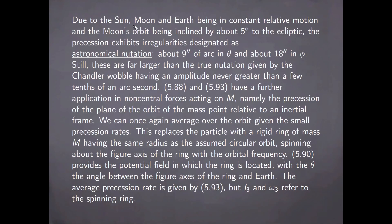Due to the Sun, Moon, and Earth being in constant relative motion and the Moon's orbit being inclined by about 5 degrees to the ecliptic, the precession exhibits irregularities designated as astronomical nutation. They are of about 9 seconds of arc in the angle theta and about 18 seconds of arc in the angle phi. Even though they appear small, they are far larger than the true nutation given by the Chandler wobble, which never has an amplitude greater than a few tenths of an arc second.